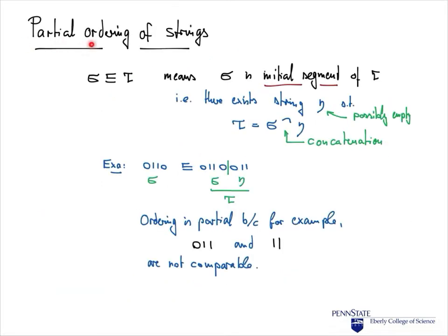Strings come with a natural partial ordering, given by the initial segment relation. We say that the string sigma is an initial segment of tau if there is a string eta such that if we extend sigma by eta we obtain tau — this denotes the concatenation operation. For example, 0,1,1,0 is an initial segment of 0,1,1,0,0,1,1, and the string eta by which we extend sigma to obtain tau would be 0,1,1.